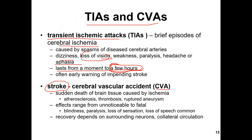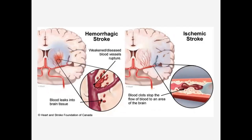Cerebral vascular accident — CVA — is the sudden death of brain tissue caused by ischemia. Firstly we have TIA, but if TIA is not treated, it becomes stroke and the tissue dies. The causes are atherosclerosis, thrombosis, or a ruptured aneurysm. There are two types of stroke: ischemic and hemorrhagic. Hemorrhagic stroke is more dangerous — ischemic stroke can be treated with heparin or vasodilators, but hemorrhagic requires surgery.